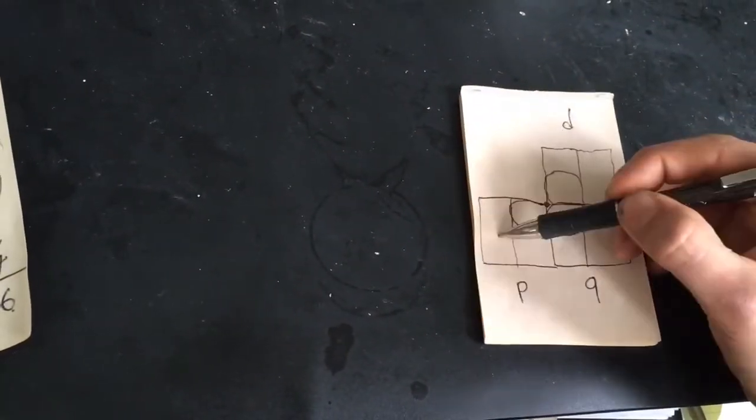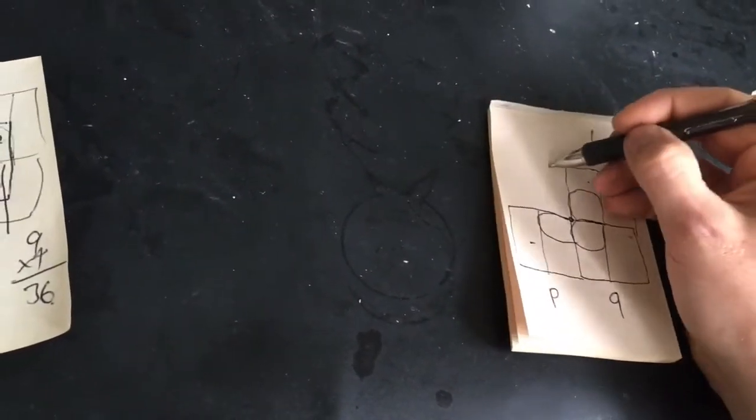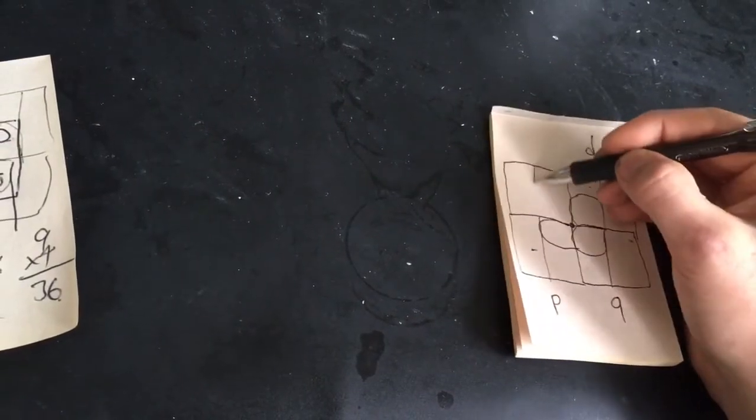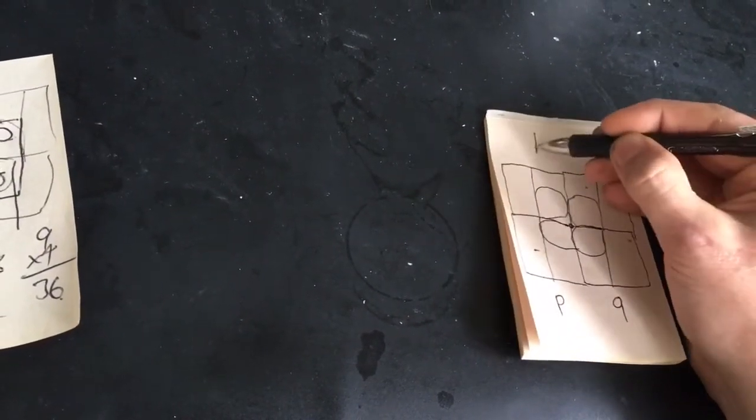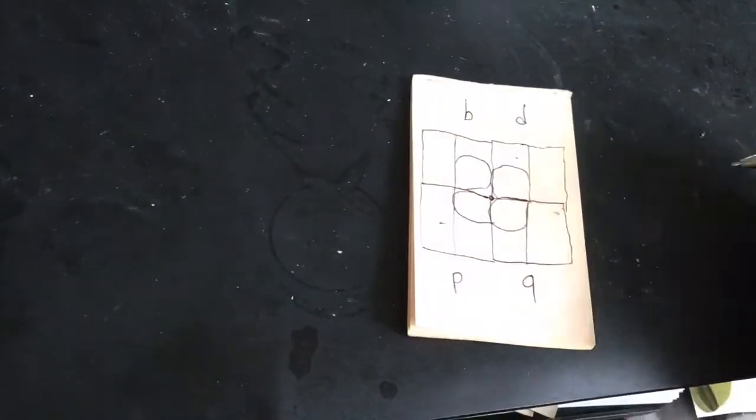And then when you take the binary difference between this one and this one, you're going to get this matrix, which is the lowercase b. Interesting.